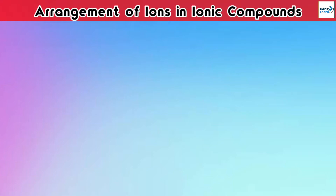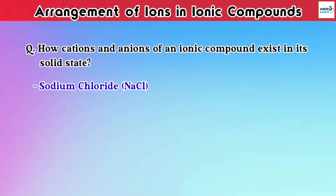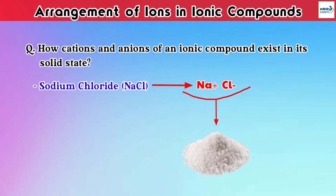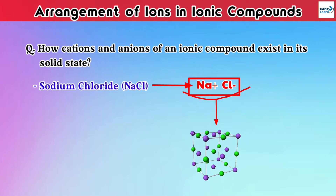Did you know how cations and anions of an ionic compound exist in its solid state? Now if we take the example of NaCl compound, if you think that the pairs of Na+ and Cl- as units would be present in the solid crystal of sodium chloride, then it is not correct. Na+ and Cl- combinedly exist in the form of a cubic lattice crystal structure. This is because forces of attraction are not restricted to a single unit of Na+ or Cl- ions.